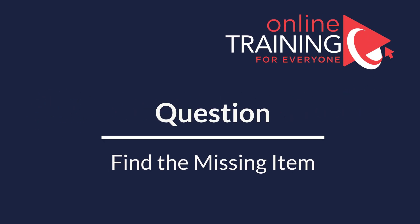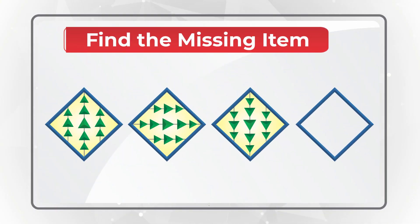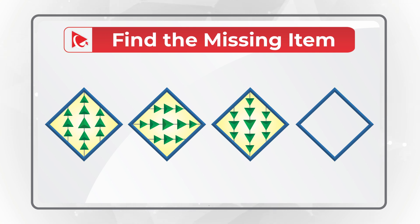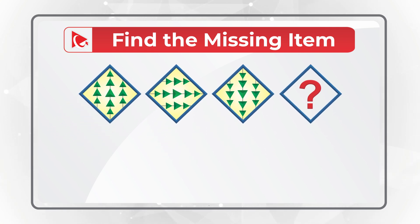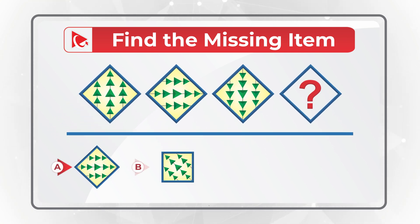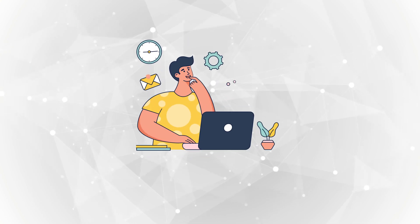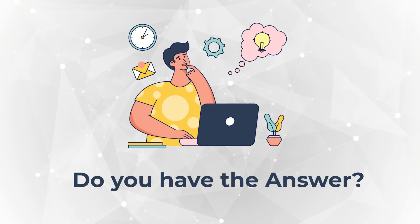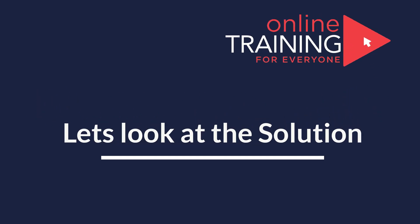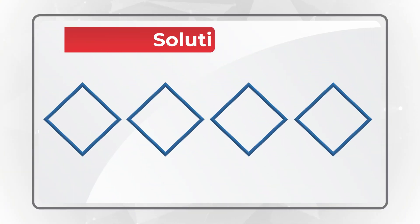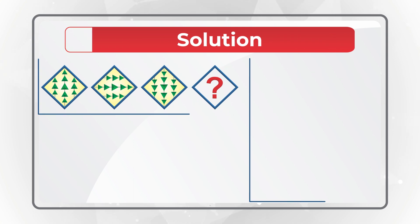Here's a question that tests your analytical skills. You're presented with a set of diamonds, each containing other objects inside, and you need to find the missing diamond — diamond number four — from choices A, B, C, and D. The key to answering this question is to detect the pattern.